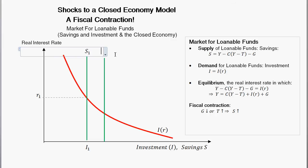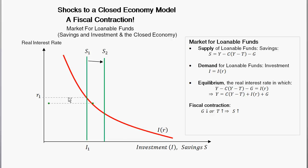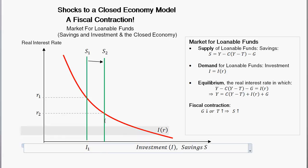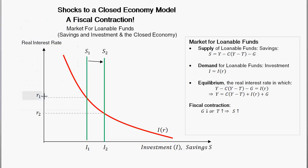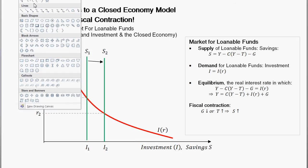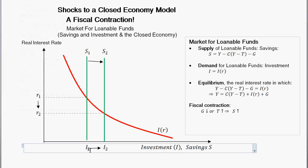We show this increase in savings with a shift out in the savings schedule. Savings were at the S sub 1 line and now they're at S sub 2. The subscripts indicate the initial and new savings schedules — you can also add a little arrow on your exam or problem sets. So we started at S sub 1 and now we're at S sub 2. The new equilibrium real interest rate is the point where supply of loanable funds equals demand, which I'll label R sub 2. And we add I sub 2 for the new investment level.